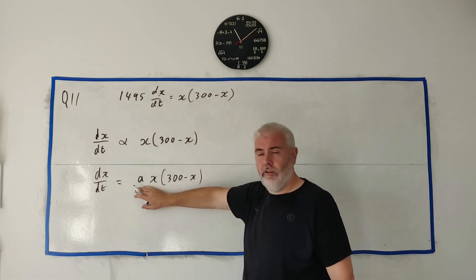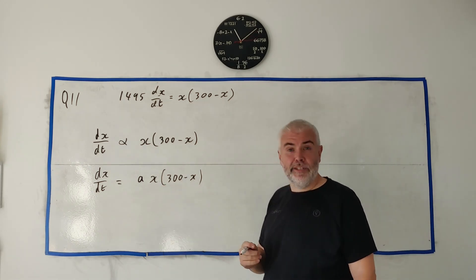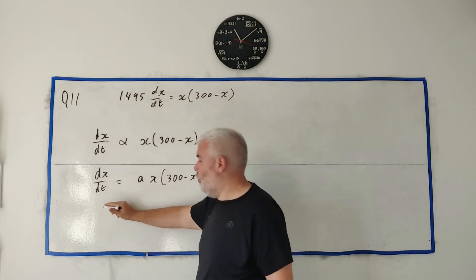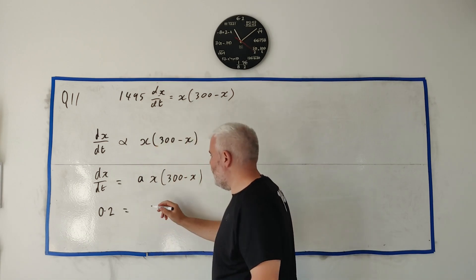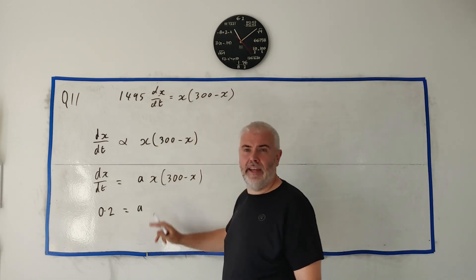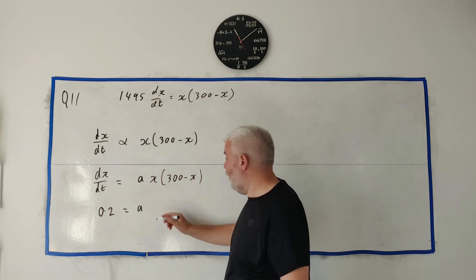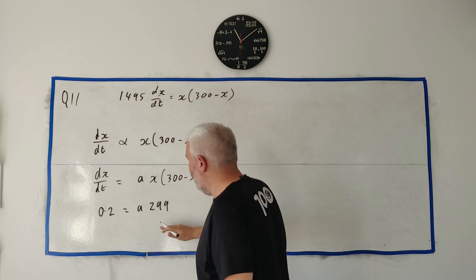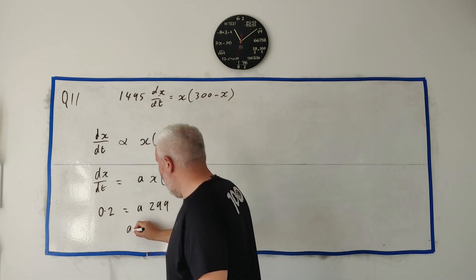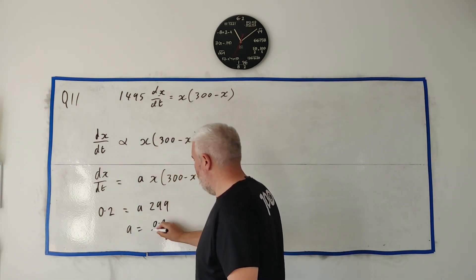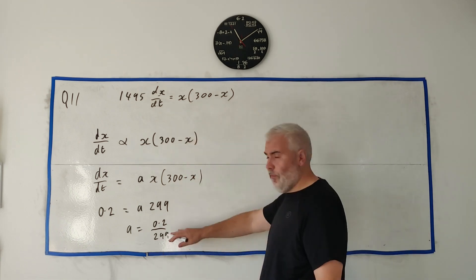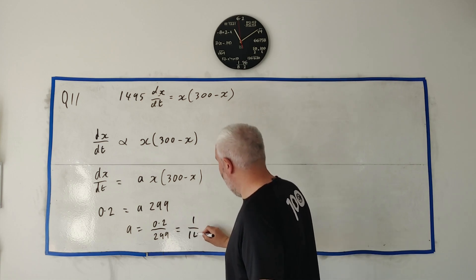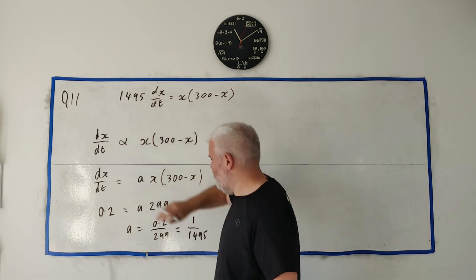So, we just have to solve A. But that's good because we know at time 0, at time 0, this is actually equal to 0.2. We know at time 0, X is actually equal to 1. So, X is 1. 300 minus 1, that's 299. So, we can just solve for A. A is just equal 0.2 over 299. And if we put that into a calculator, we'll find out that's the same as 1 over 1495.